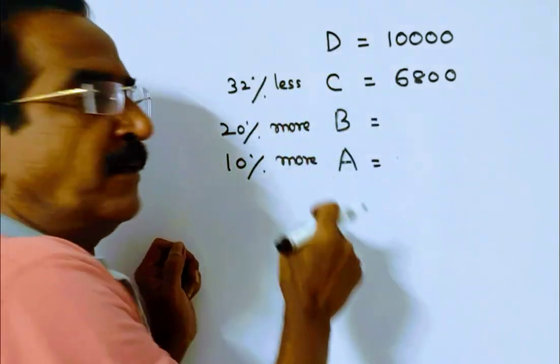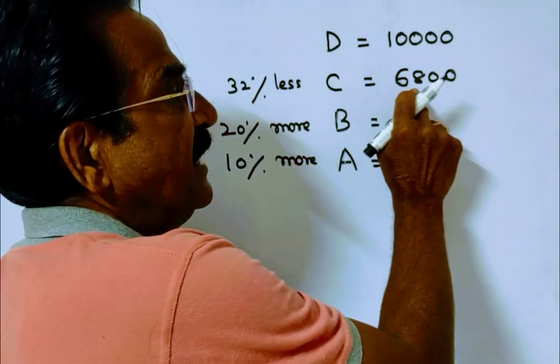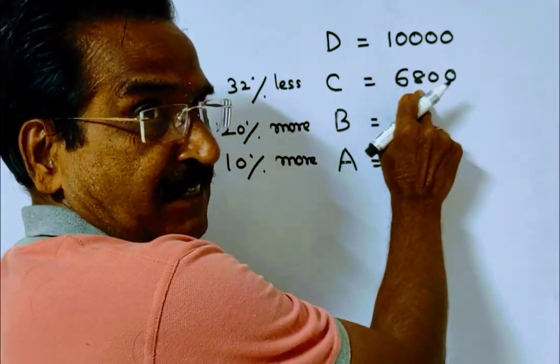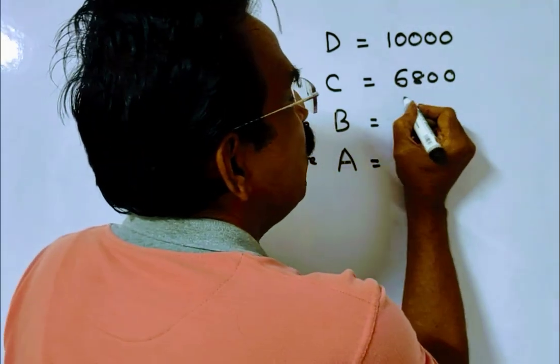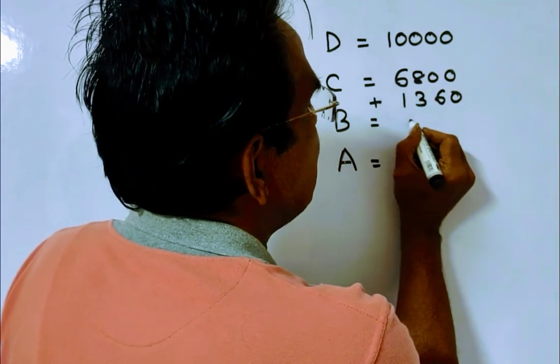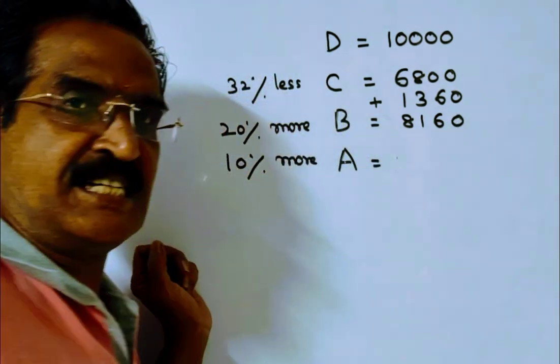B obtained 20 percent more than C. 20 percent of 6,800: 268, 136 plus 0. So 1,360 more. That means 8,160.